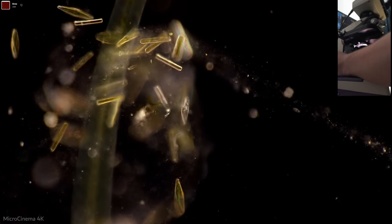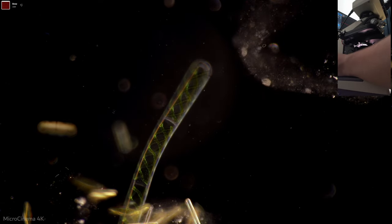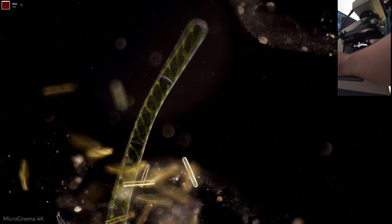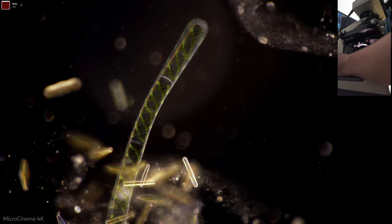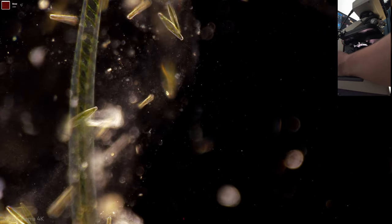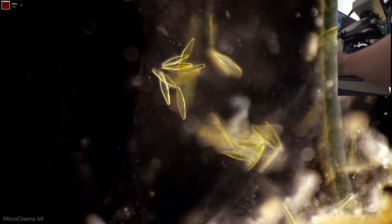But if we go to the 10X lens, this is my 10X S plan Apo lens, then we get a real nice dark field. And there's no vignetting or anything like that. It's just good old dark field.